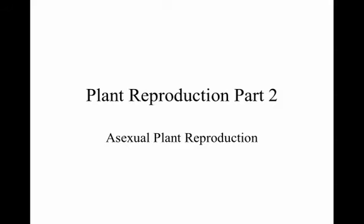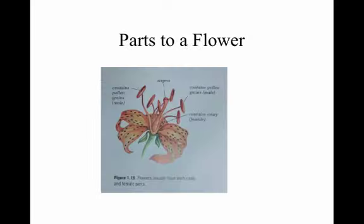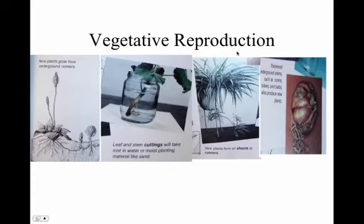Let's deal with plant reproduction part two, and we're going to focus in on asexual reproduction, which is reproduction where one plant can produce brand new plants. We looked at the parts of a flower — flowers and cones are part of sexual reproduction in plants, and that creates a seed, and that new seed is a little bit different.